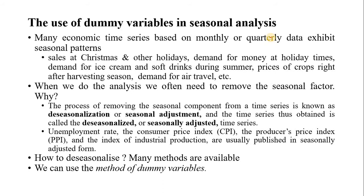Data obtained after the de-seasonalization process is known as de-seasonalized data or a seasonally adjusted time series. If you look at ready-made secondary data available on a monthly or quarterly basis — like the unemployment rate, consumer price index, wholesale price index, or index of industrial production — all these data are usually published after seasonal adjustment.